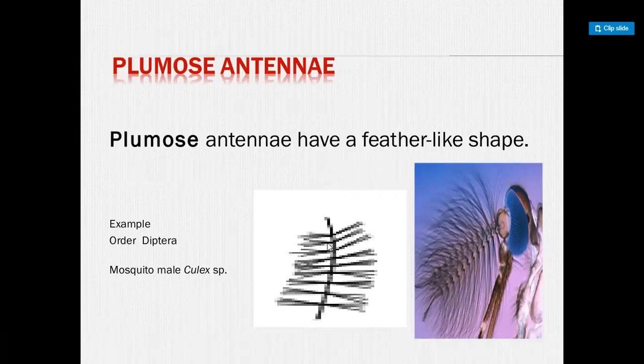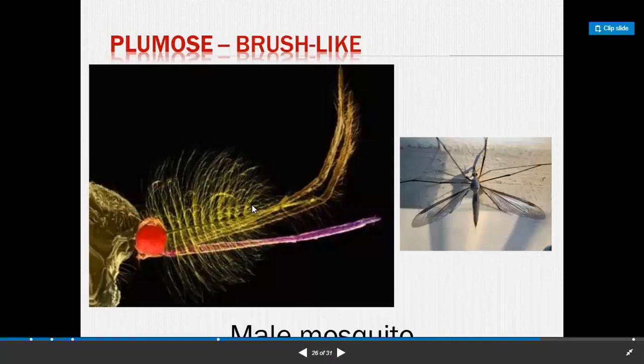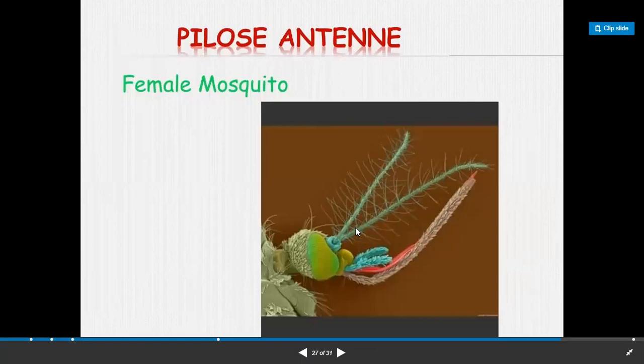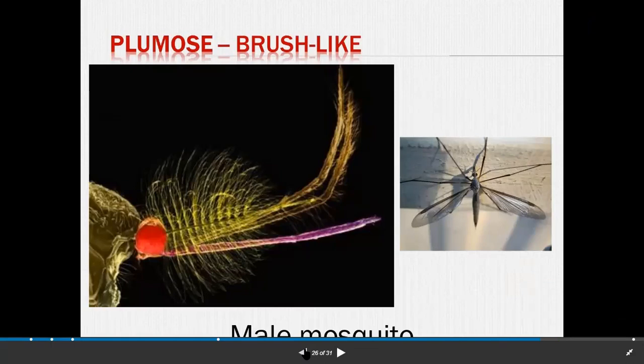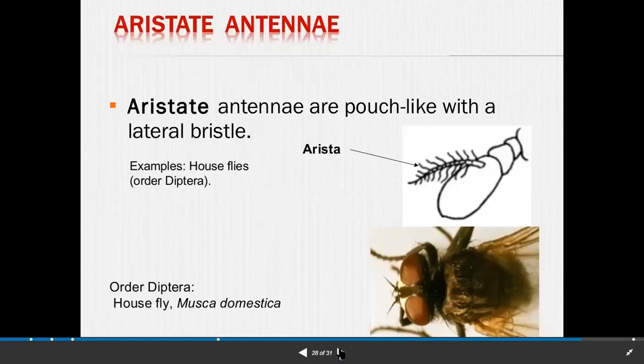Next is plumose antenna. Plumose antenna also have a feather-like shape, also known as brush-like or bottle brush-like antenna. Example: male mosquitoes, order Diptera. There is a difference: plumose antenna with brush-like appearance is present in male mosquito, while pilose antenna is present in female mosquito. Next is aristate antenna. Aristate antenna are pouch-like with a lateral arista. This type of antenna is present in housefly, order Diptera.